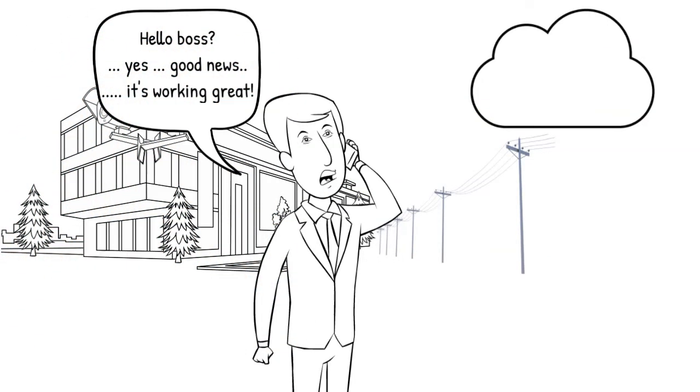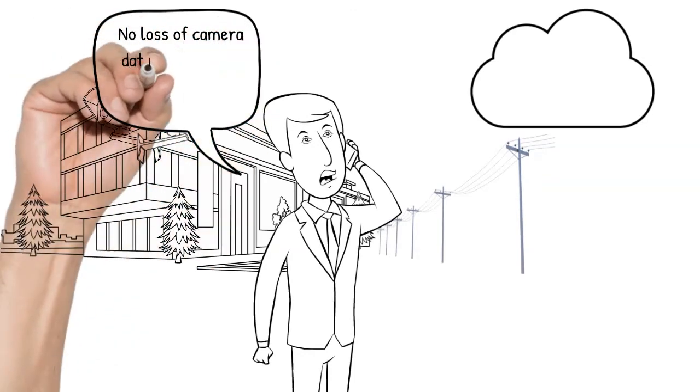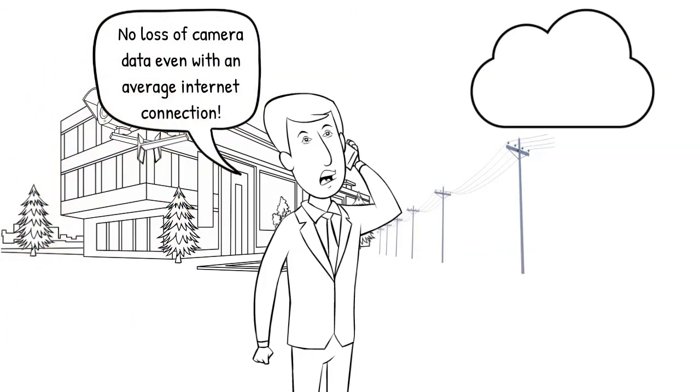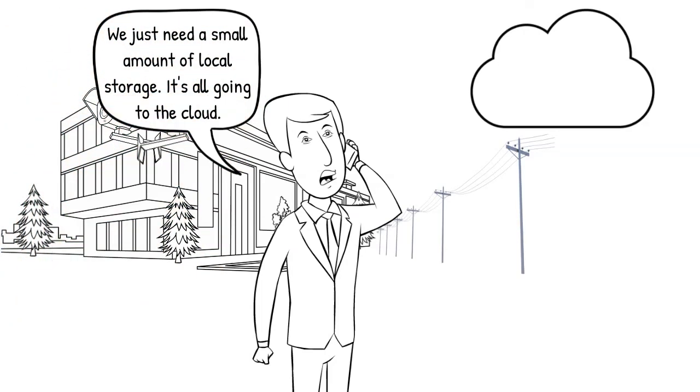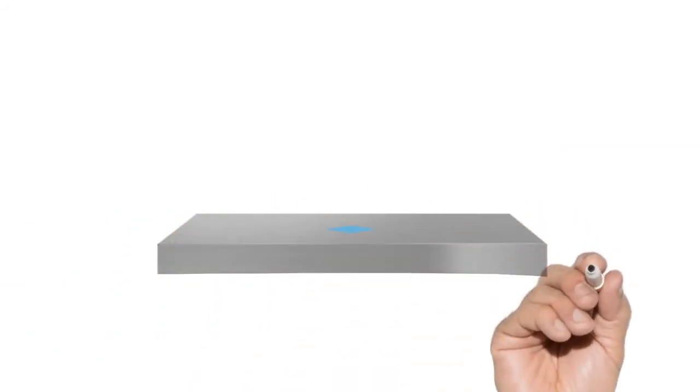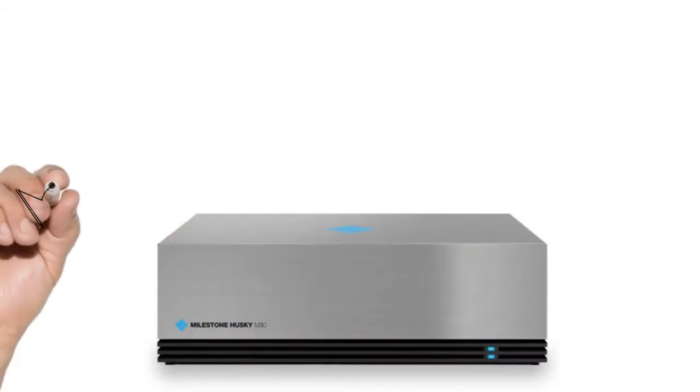Your local recording server simply turns into a local cache that only needs to store a few days worth of camera data. In fact, just enough to absorb any internet fluctuation and outage that might occur over a period of time. If the internet goes down, Storage Bridge will simply catch up as soon as it can when the connection returns.